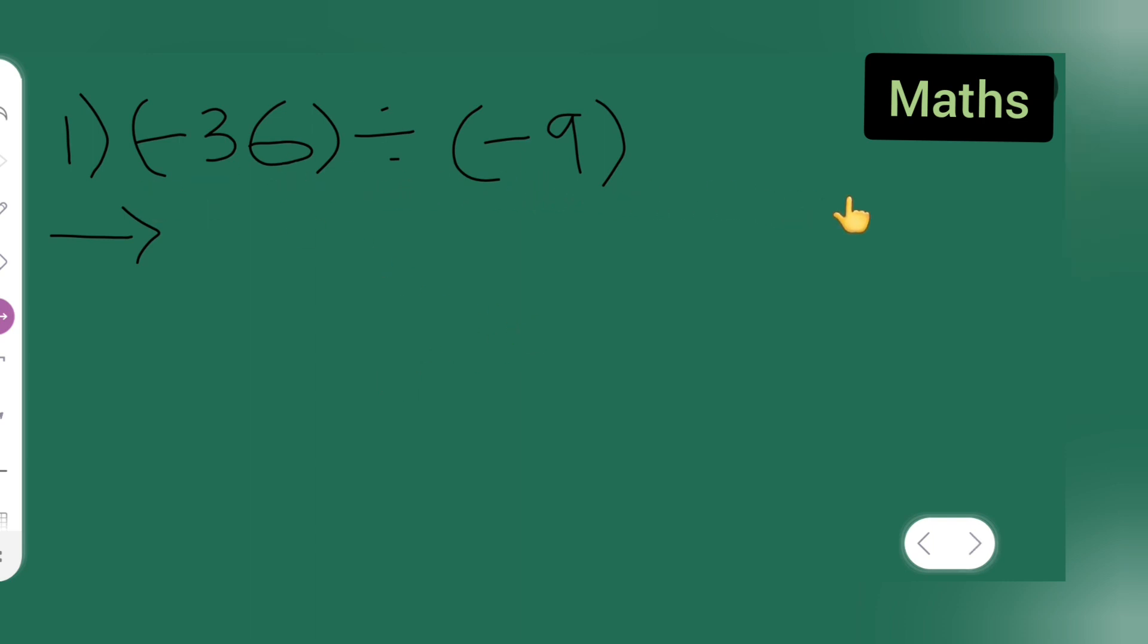What you have to do is minus 36, multiply it and take the reciprocal of it. So it will be 1 upon minus 9.